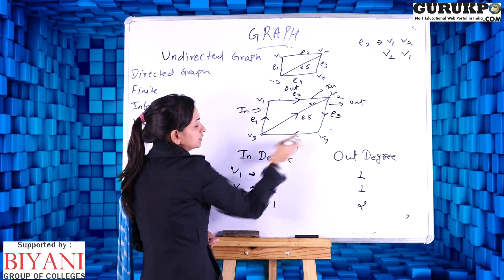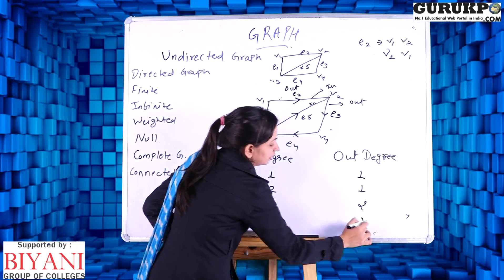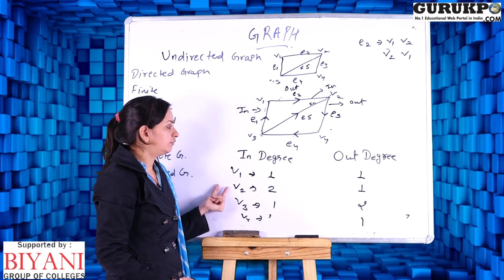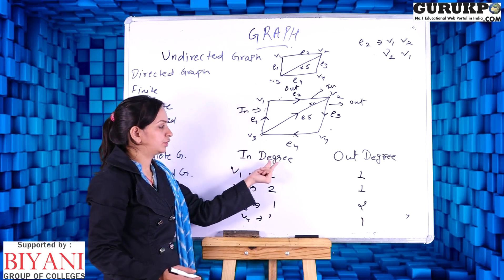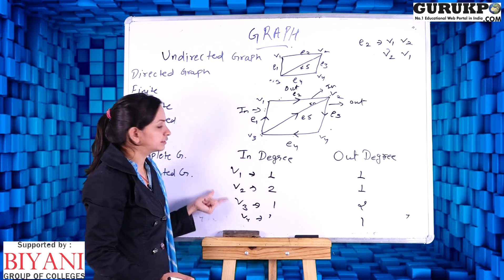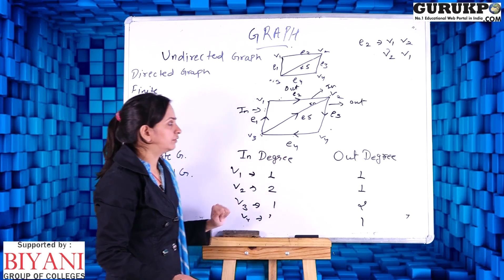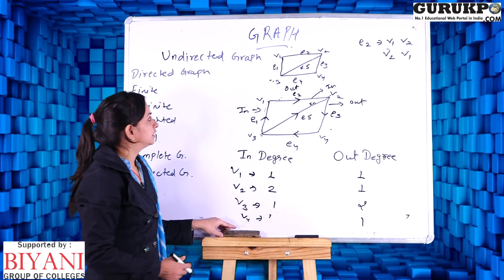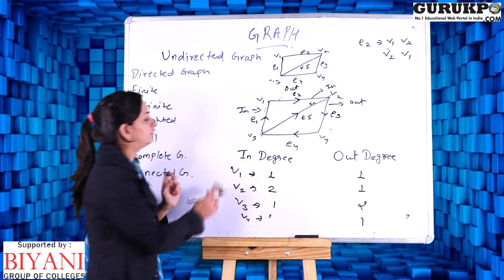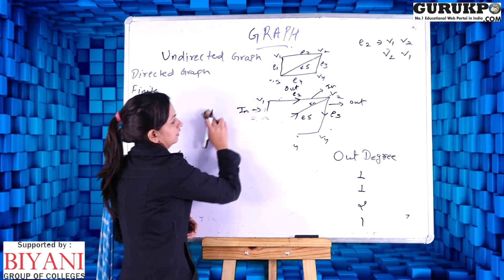For V4, one edge is coming toward it and one is going outside, so V4 has one in-degree and one out-degree. In this way we find the degrees in a directed graph. In a directed graph there are two types of degree: in-degree and out-degree. So if you have to calculate the degree of vertices in a directed graph, you have to count both in-degree and out-degree. These are the two types of graph we discussed: undirected graph and directed graph.